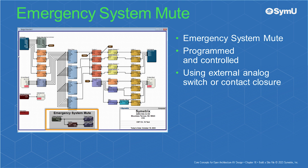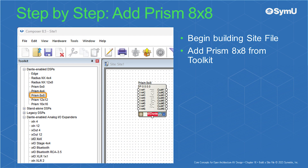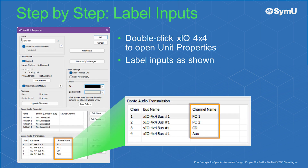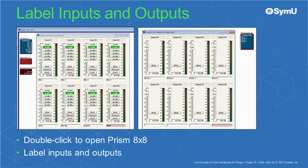Pay close attention to placement of modules and wiring to help keep organized along the way. Begin building the site file by adding a Prism 8x8 from the toolkit. Next, add an XIO 4x4 from the toolkit. Double-click the XIO 4x4 to open the unit properties. Label the inputs channels as shown. Note these are Dante audio transmission channels, meaning they will transmit to the Prism. Next, double-click and open the Prism 8x8, then double-click to open and label all inputs and outputs as shown.